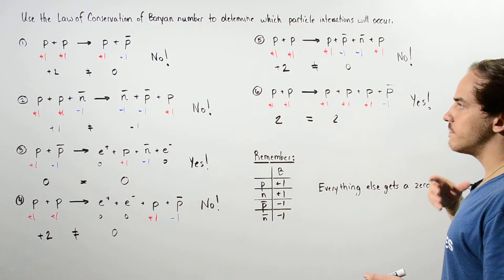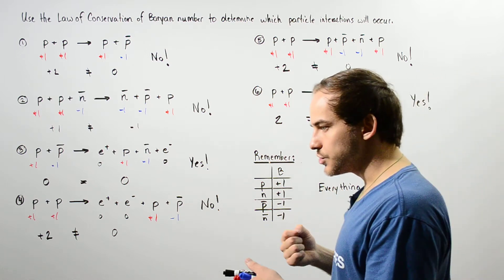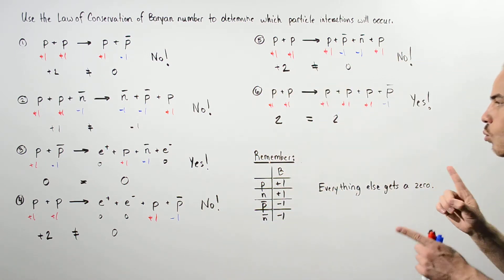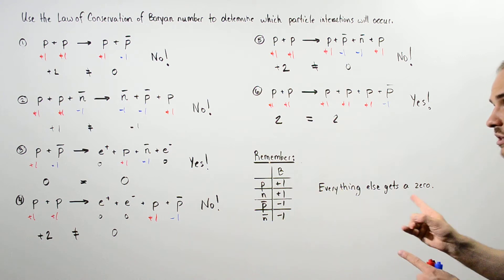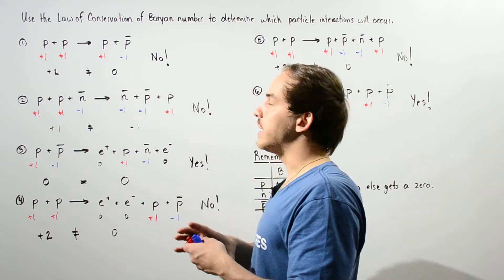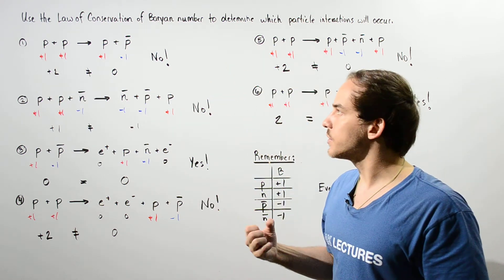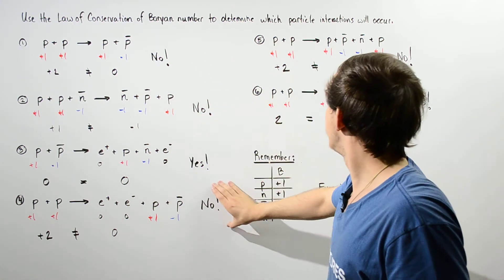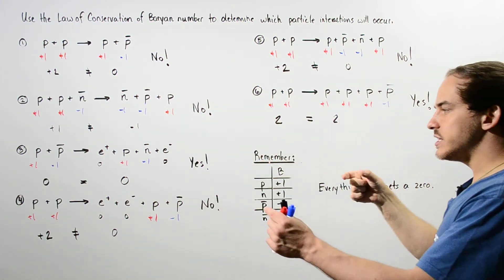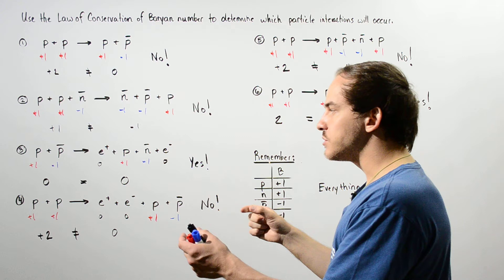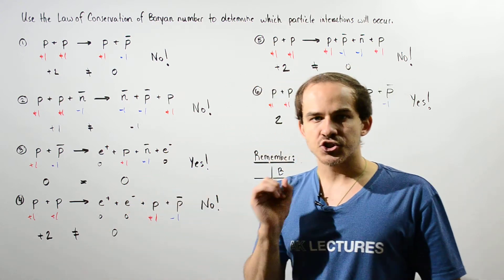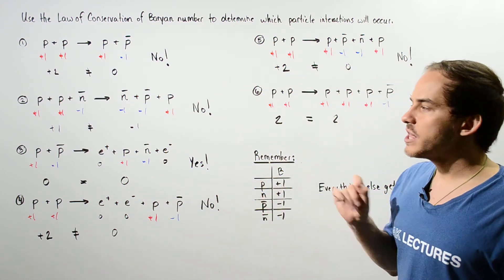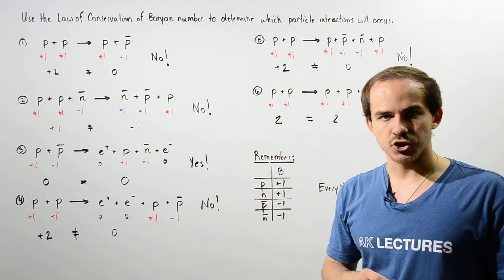So out of these six particle interactions, only two of them occur according to the law of conservation of baryon number. Interactions one, two, four, and five do not conserve the baryon number, and so they will not take place in nature.